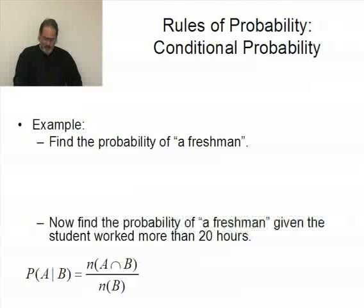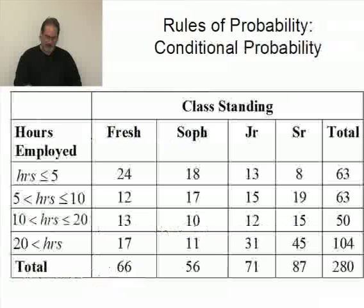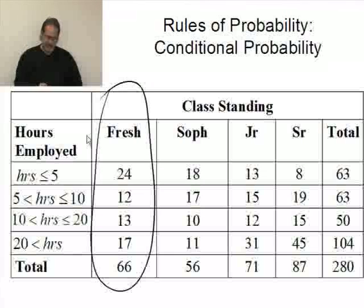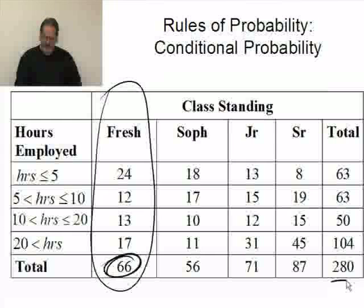Going back to that table we've been working with, let's find the probability of a freshman. And then I want to find the probability of a freshman given that the student worked more than 20 hours. The probability of a freshman means freshman is my universe. There are 66 ways that could happen out of the total of 280. So this probability will be 66 out of 280.